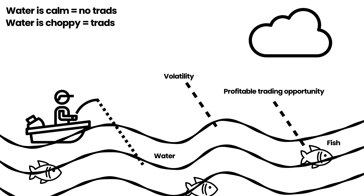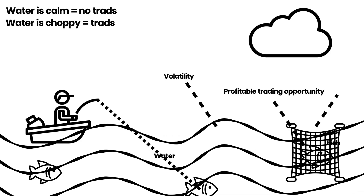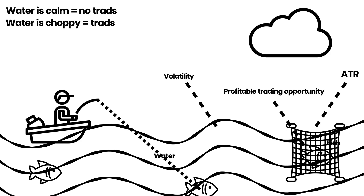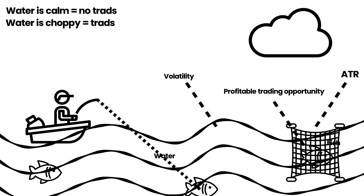When the water is choppy and the waves are bigger, it's time to fish — the strategy may take trades here. The net represents ATR, which measures volatility. The strategy triggers a buy signal when volatility is high and the price dips. The sell condition occurs when volatility remains high but the price reaches a certain profit target or hits a certain distance from the entry price.